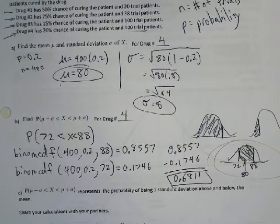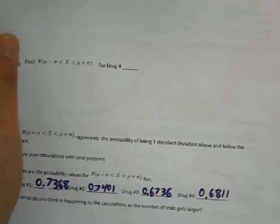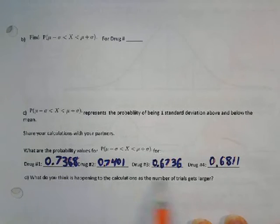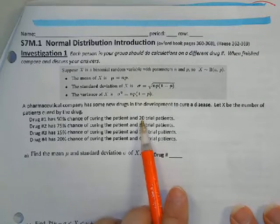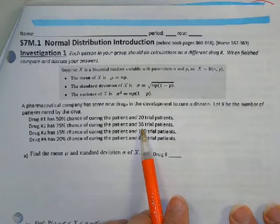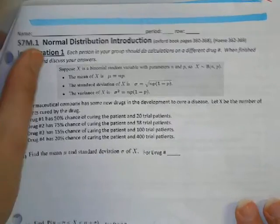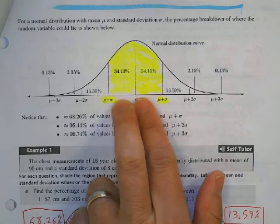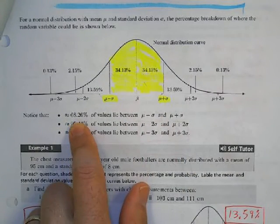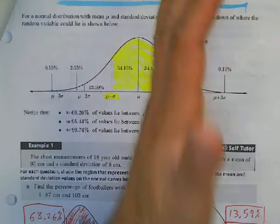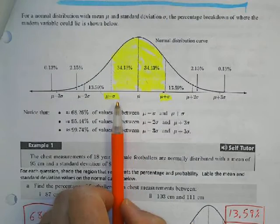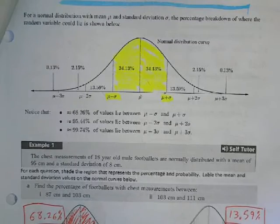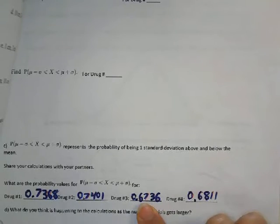If you check your data with your partners, you'll see that when n was small (20 or 38), accuracy was lower. With more trials, accuracy increases. The key takeaway is that going one standard deviation above and below the mean will always give approximately 68.26% of the data, regardless of the probability of success or the mean. In example four we got 68.11% and 67.36%.